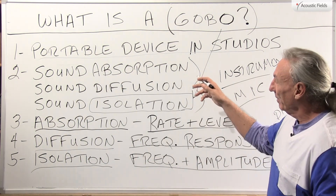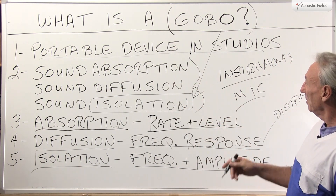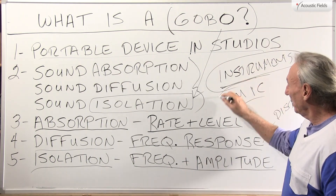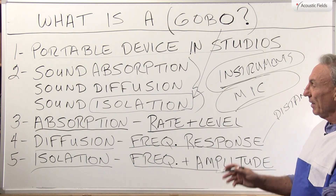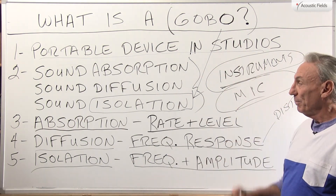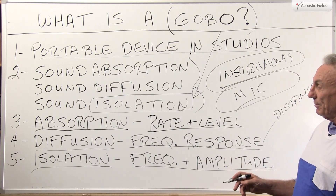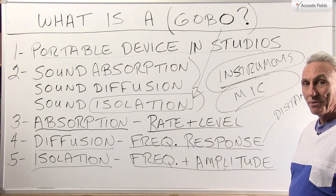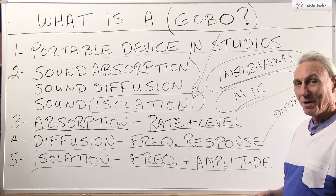Three possibilities that this portable device can be used for, and I think its main purpose is to isolate instruments and vocals from other microphones. So in the case of the word gobo it's more of a barrier technology, and of course if it's a barrier technology we need to know the frequency and amplitude that we're trying to isolate from. I see all kinds of these devices.